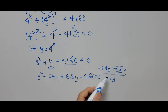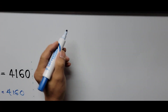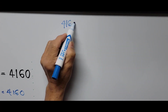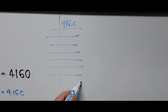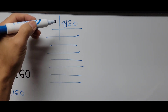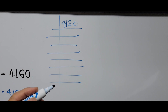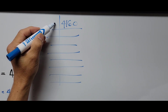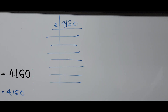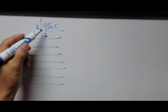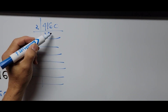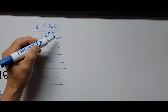You might be wondering how I arrived at the factors 64 and 65 for 4160 — let me show you. We start by dividing 4160 by 2, since it ends in 0. We keep dividing by 2: 4160 ÷ 2 = 2080, ÷2 = 1040, ÷2 = 520.